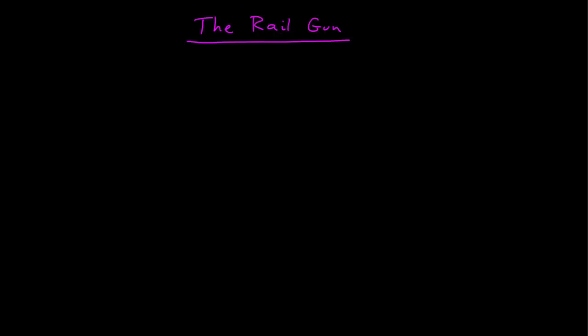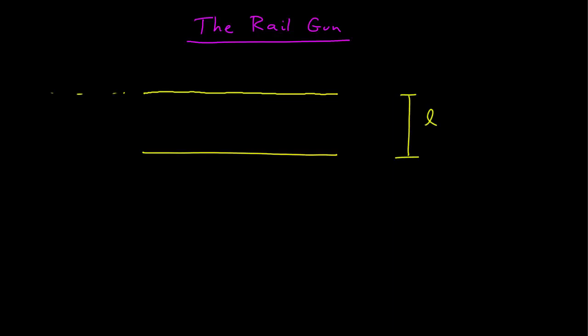The rail gun is an application of magnetic forces on current-carrying wires, and so it starts with two wires, which are the rails, and they are separated by some distance, we'll call L. Now off-screen, their potential difference, say of delta V, connects the two wires, so that if they were connected to complete a circuit, there would be a current that would then flow.